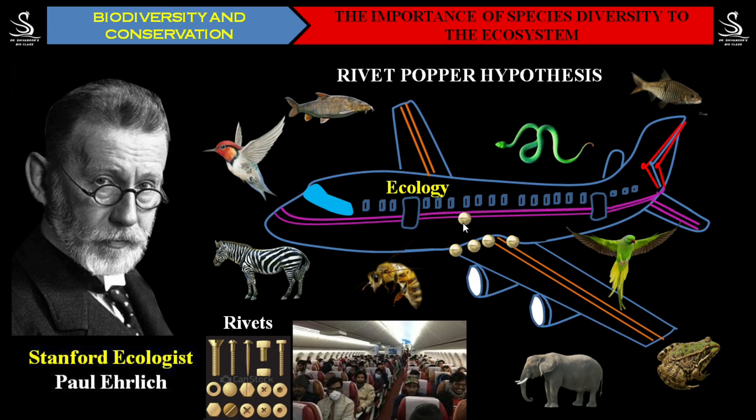So here, one passenger has poked out one rivet — one part becomes loose. In the initial period there will not be any major problem with the safety of the airplane. But suppose many such passengers, every time they get off, take one or two rivets — is it going to cause severe damage to the airplane? One hundred percent yes. Suppose one passenger poked out a rivet from the wing — consider that rivet represents the honeybee. Do you know the importance of honeybees in the ecosystem? They play a very important role — they help with pollination.